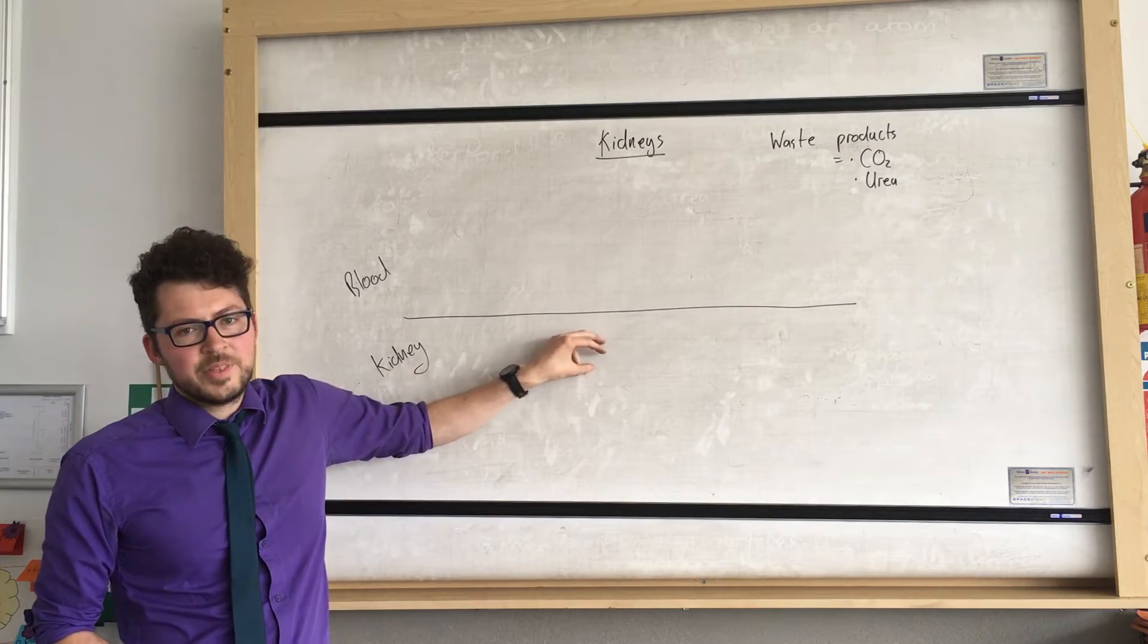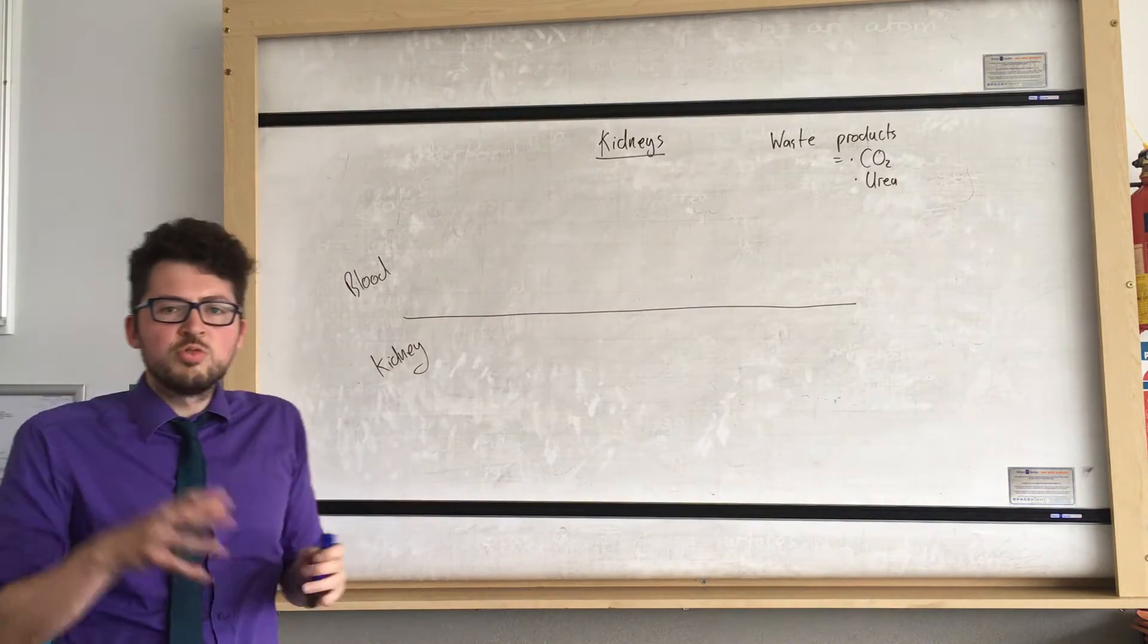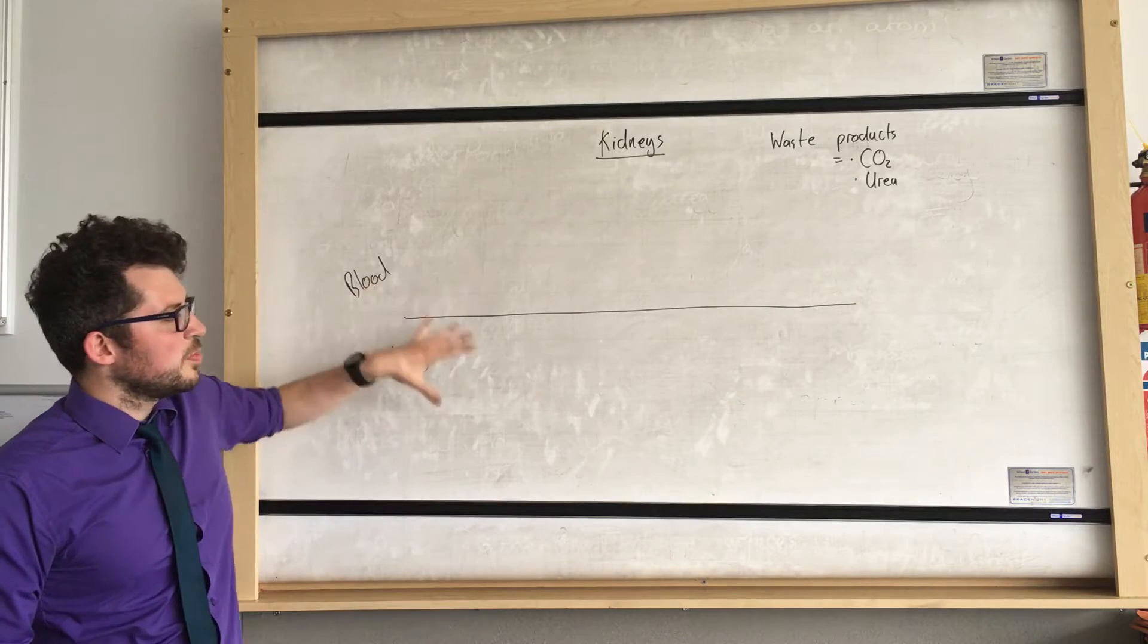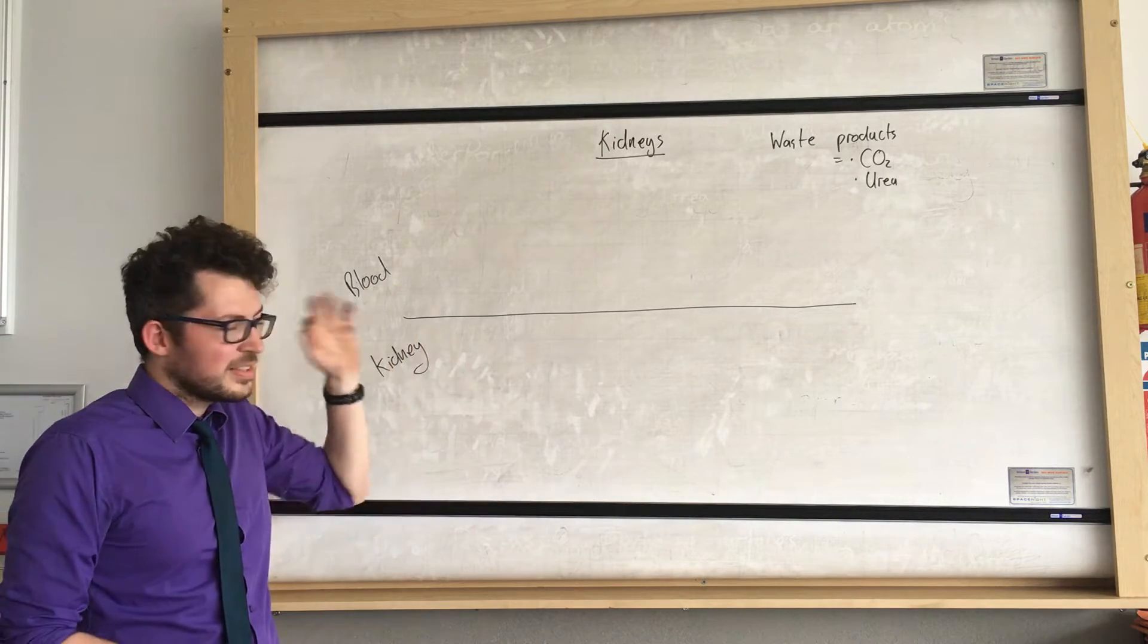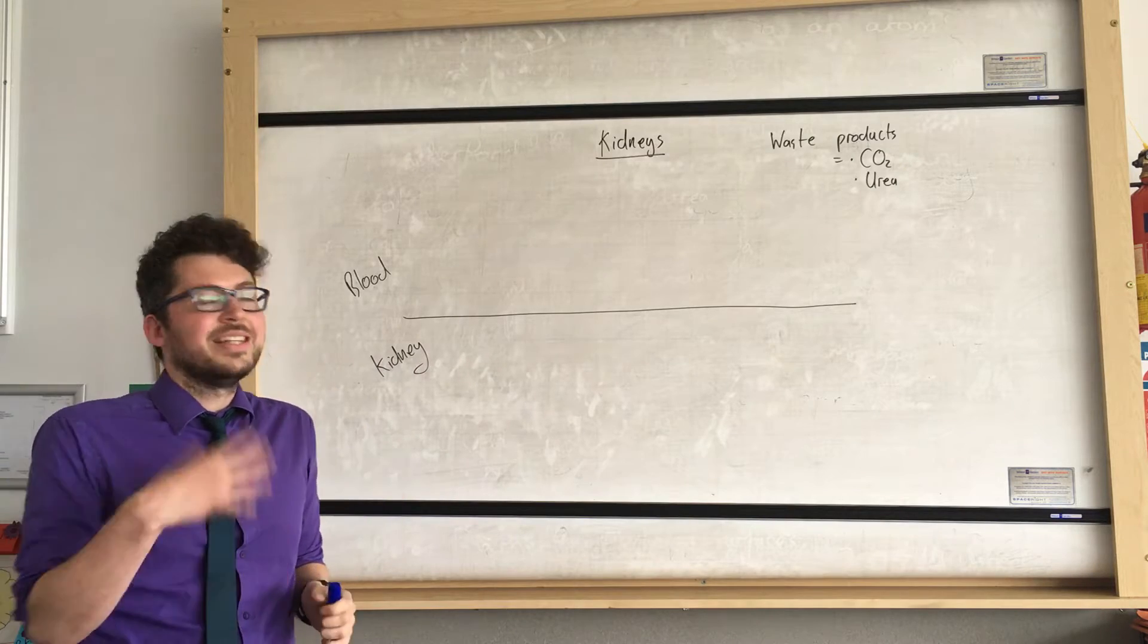So imagine we've got the blood vessels running through the kidney. In reality it's much more complicated than this but you don't need to know the structure of the kidney. So this is fine for our intents here.